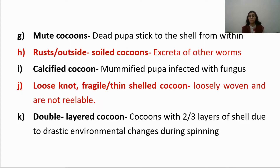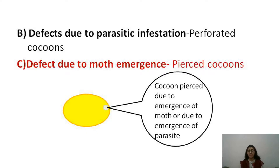Double layered cocoons have 2 to 3 layers of shell due to drastic environmental changes during spinning. They appear slightly larger than normal cocoons and must also be removed. Perforated cocoons result from parasitic infestation by uzi fly or dermestid beetle and must be removed. Similarly, if cocoons are harvested late, the adult moth emerges and pierces the cocoon; such pierced cocoons fetch no price and must be removed from the lot.